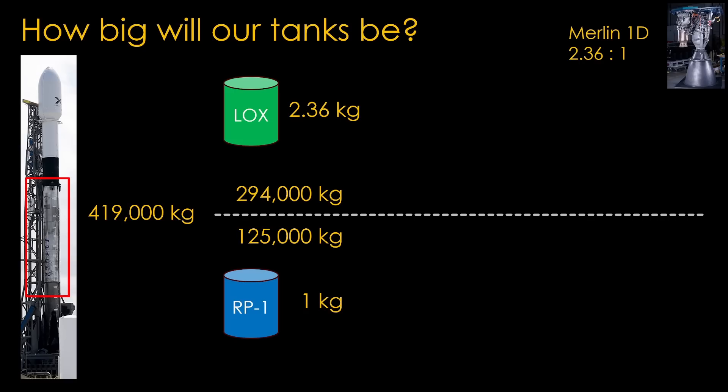Liquid oxygen's density is easy to find. It's about 1,141 kg per cubic meter. RP1 presents a challenge. It's not one molecule, but a mix of a whole bunch of different molecules, so the density can vary, but I'm going to use 806 kg per cubic meter. A simple division, and we find out that we need 258 cubic meters to store the liquid oxygen, and 155 cubic meters to store the RP1.